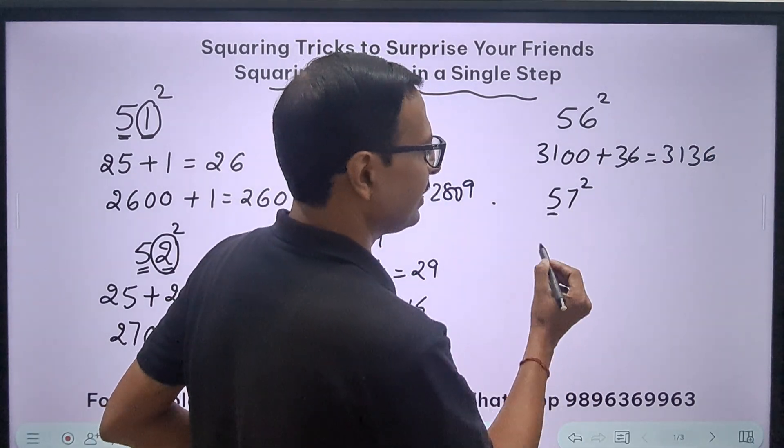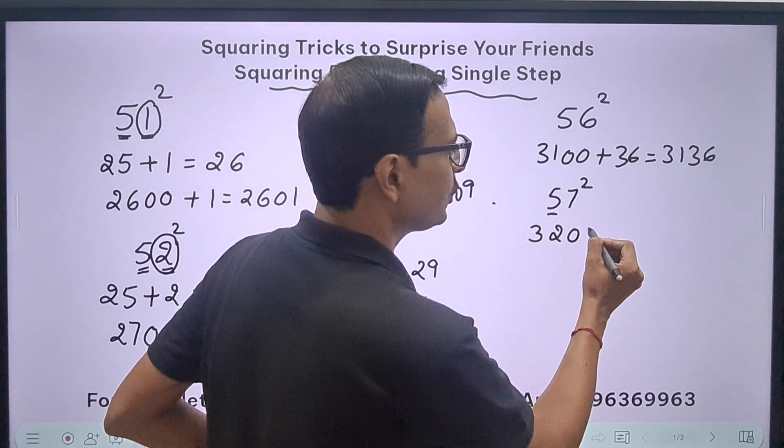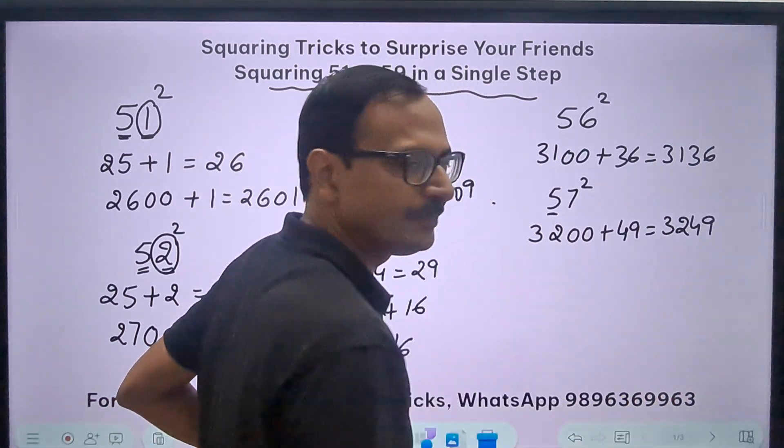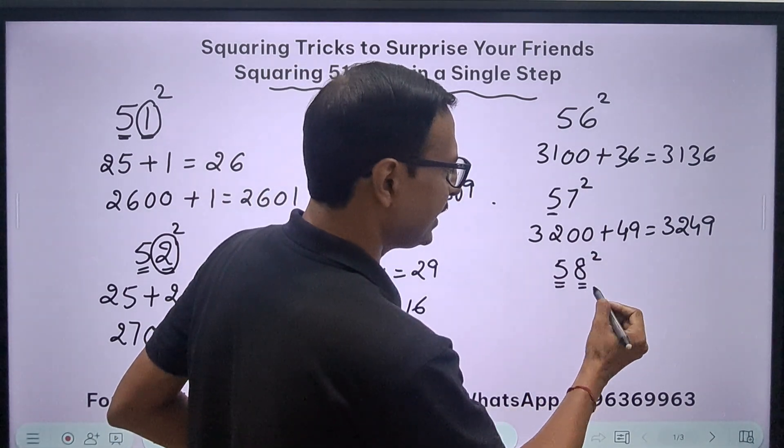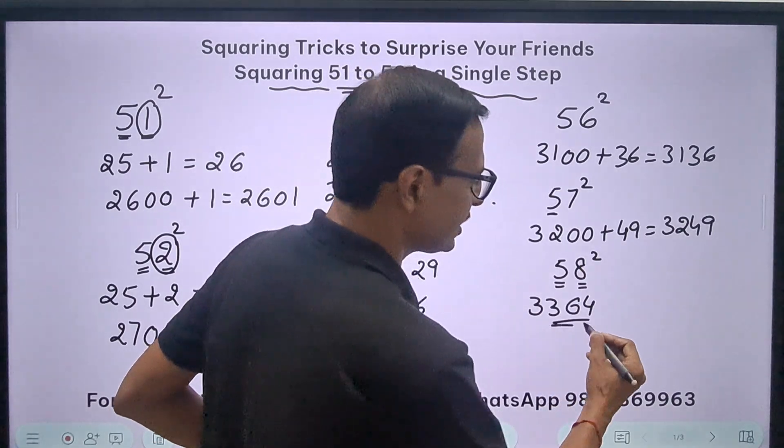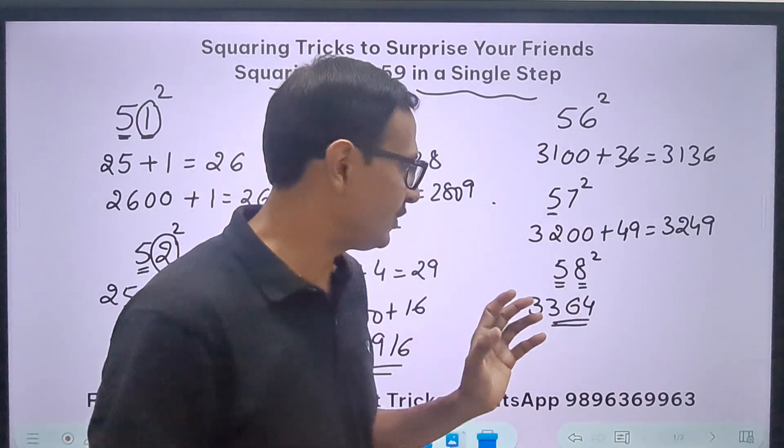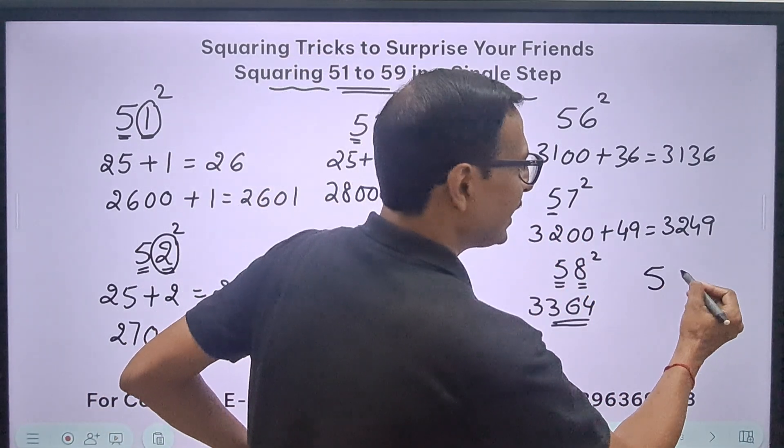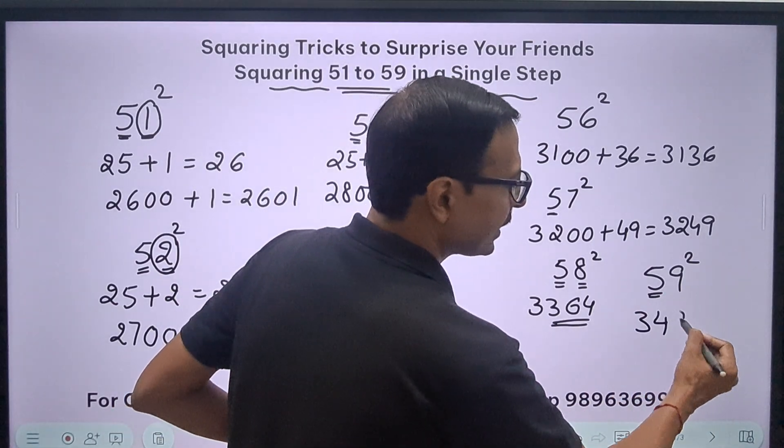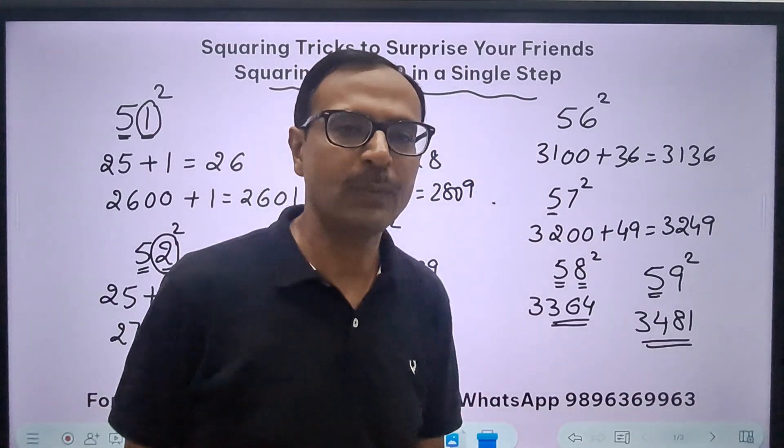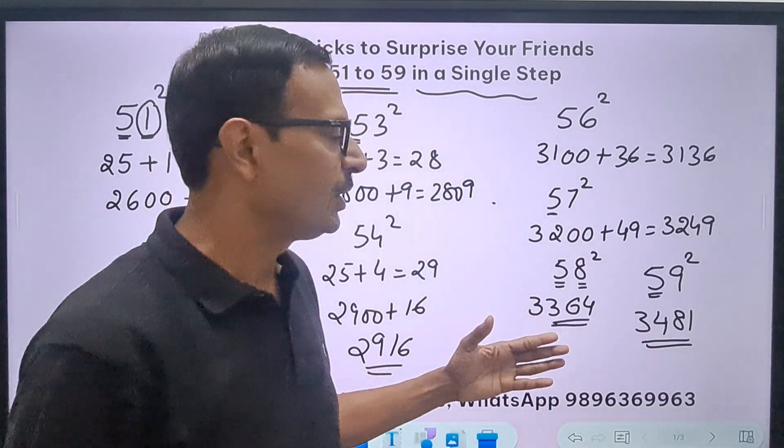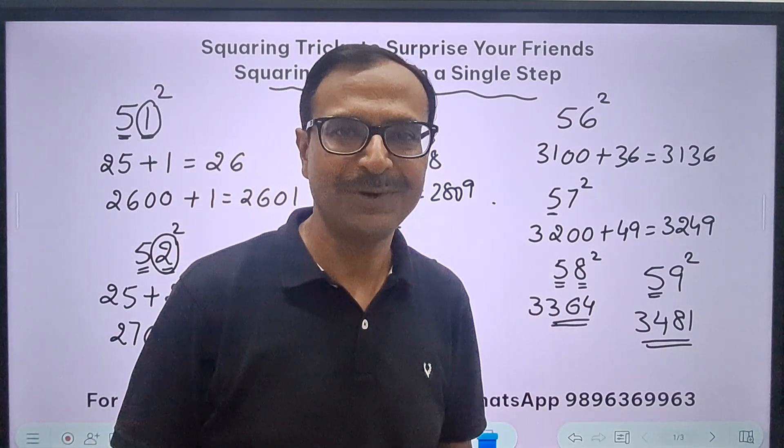How about 57 square? 25 plus 7 is 32, followed by two zeros, and add 7 square, 49. It is 3249. 58 square: 25 plus 8 is 33, so 3300, and 8 square is 64. The answer is 3364. Now I'm writing it virtually directly without using any steps. How about 59 square? See, 25 plus 9 is 34, and 9 square is 81. The answer is 3481.